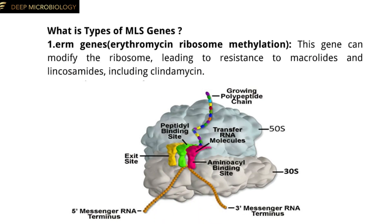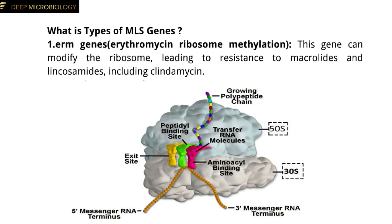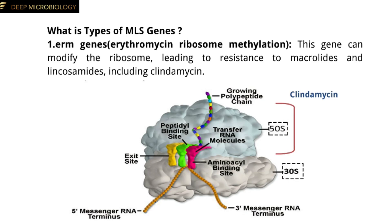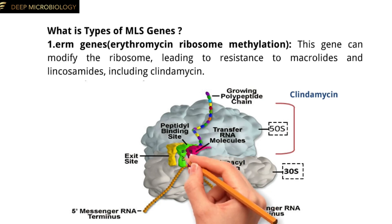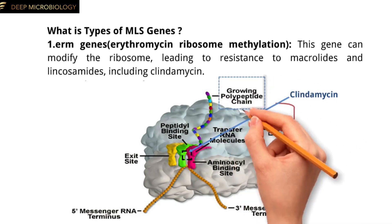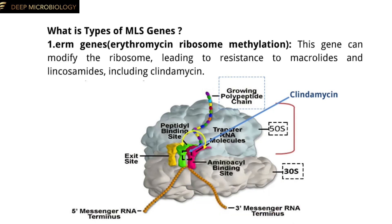The bacterial ribosome has two subunits, the 50S and 30S, involved in protein synthesis. Clindamycin, an antibiotic, binds specifically to the 50S subunit of the bacterial ribosome, targeting the 23S ribosomal RNA component within the peptidotransferase center. This center is crucial for forming peptide bonds between amino acids. By binding here, clindamycin inhibits protein synthesis, blocking the translocation of the growing polypeptide chain from the aminoacyl site to the peptidyl site during translation.